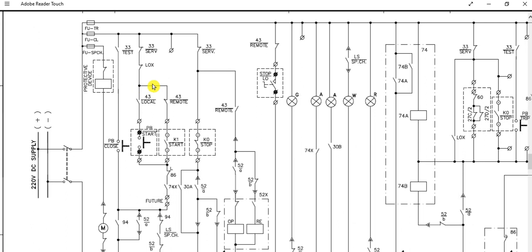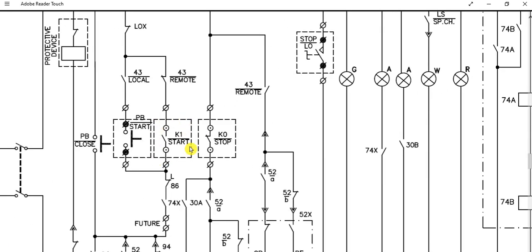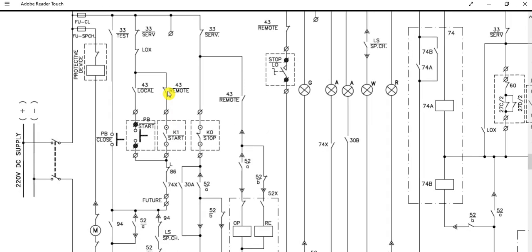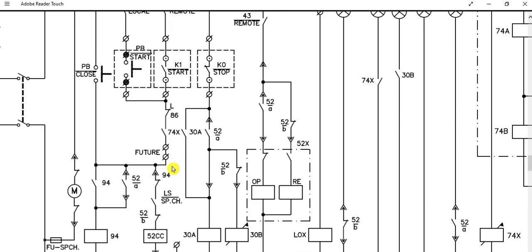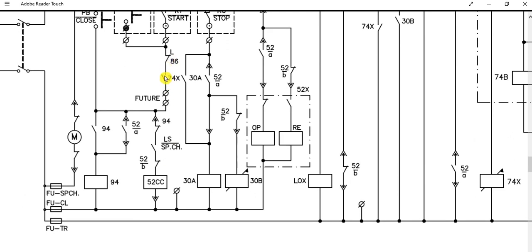If the control switch position is in remote, this path is followed. Key Q1 start is the remote operation command coming from DCS or PLC to close the circuit breaker. If you issue the close command Q1 via remote, and the 86 relay is not operated and the 74X trip circuit supervision relay is OK, then it will follow this path and energize the 52CC closing coil, and the breaker will be closed.